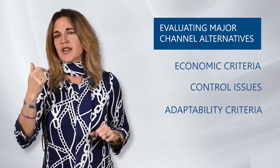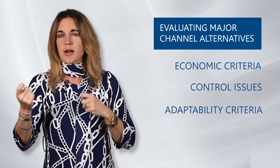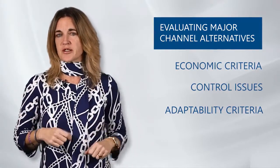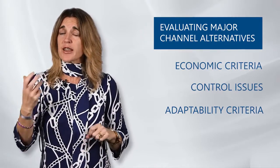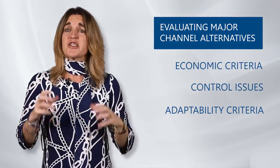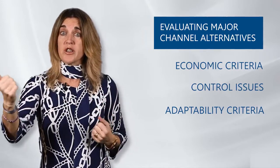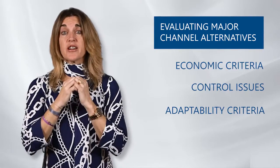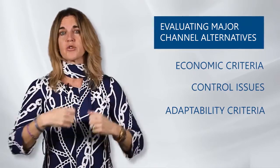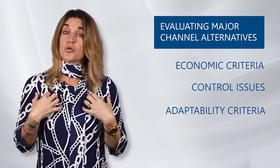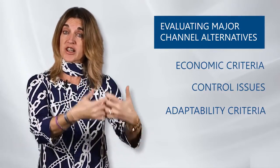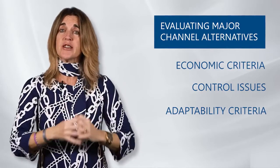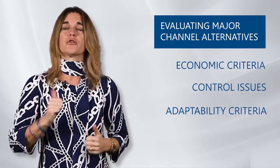Under the control criteria, it helps us decide whether to give more or less control to the intermediaries. We also have adaptability criteria — channels often involve a long-term commitment, but the company wants to keep channel flexibility to adapt to environmental changes. So if a long-term commitment channel is chosen, it must show clear superiority in economic and control terms.